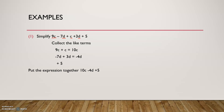So 9c plus c — we add these two together, that will be 10c. Then we have minus 7d plus 3d, which gives minus 4d. And then we go plus 5. Putting the expression together, we'll have 10c minus 4d plus 5. So by simplifying, the answer is 10c minus 4d plus 5.